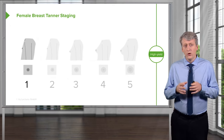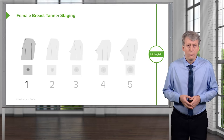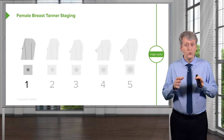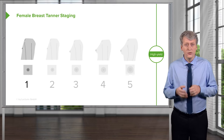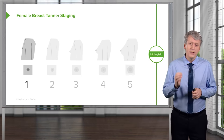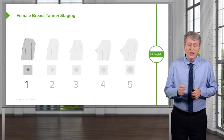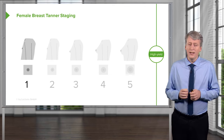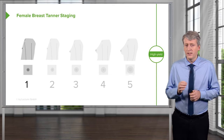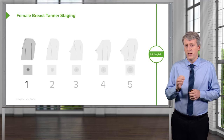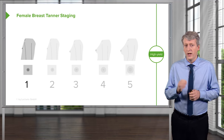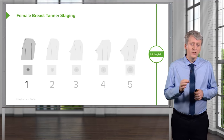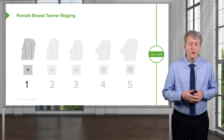In girls, we also score breast development. These are also called Tanner stages. To be clear, if a girl is Tanner 3 in her genitalia, that does not necessarily mean she is Tanner 3 in her breasts. Typically, the breasts develop a little bit earlier.